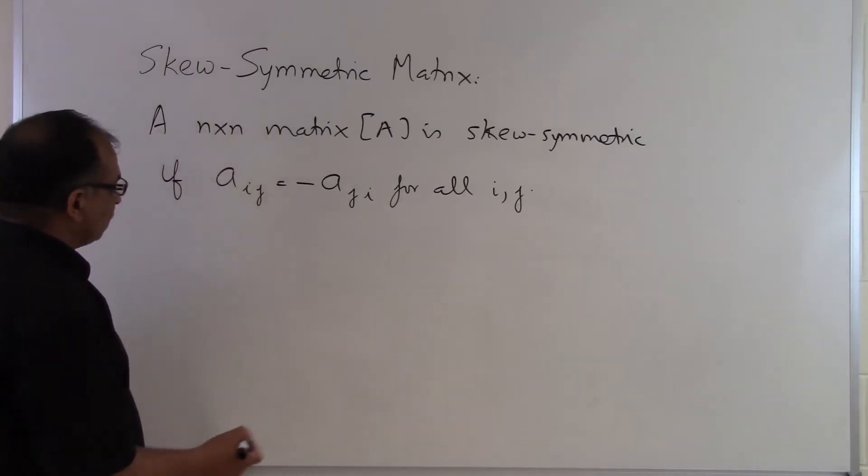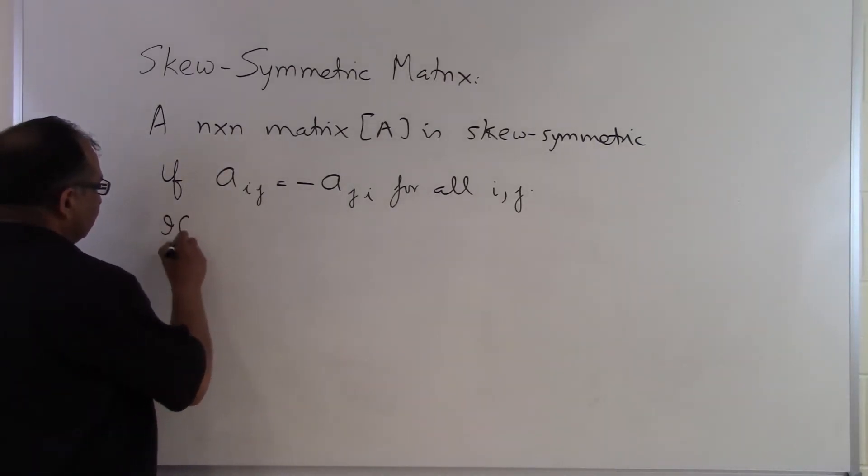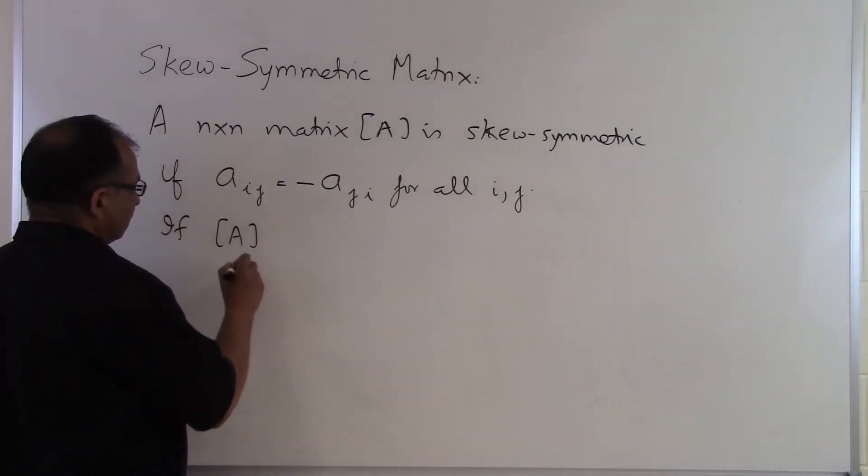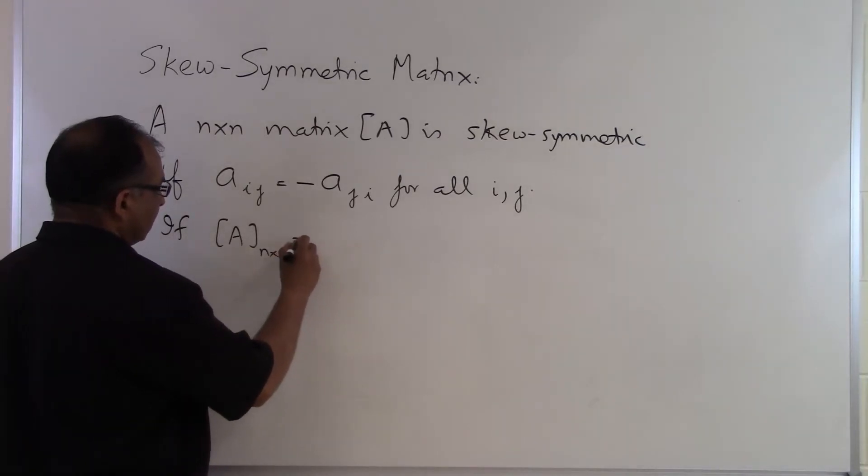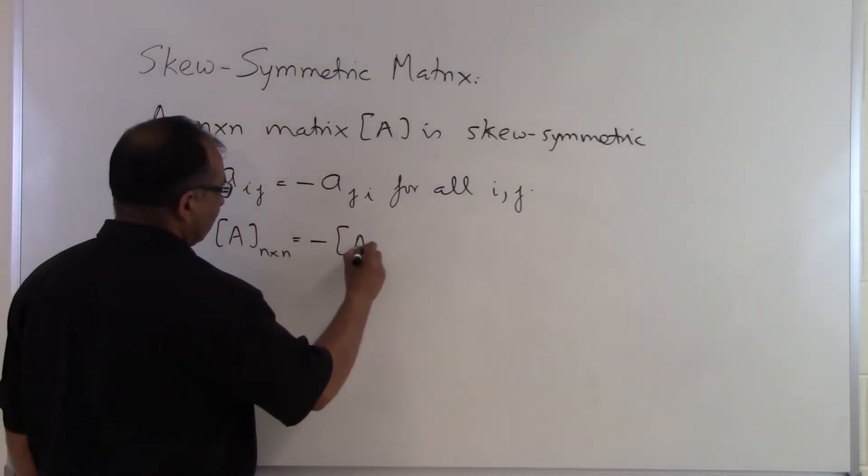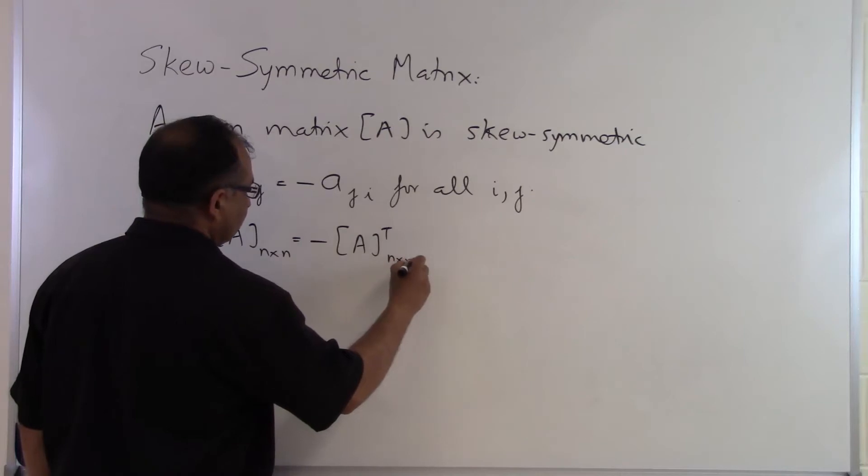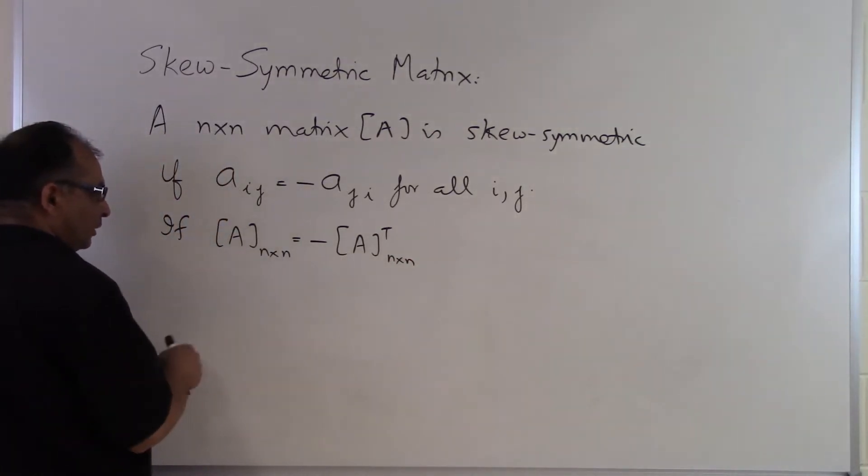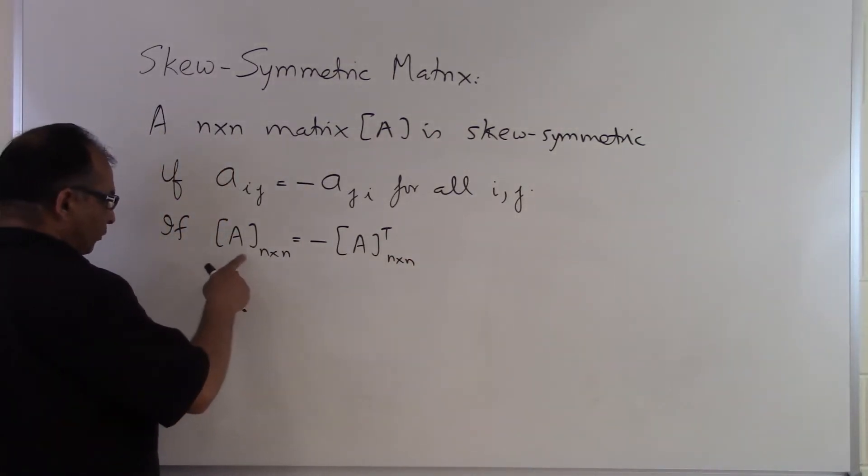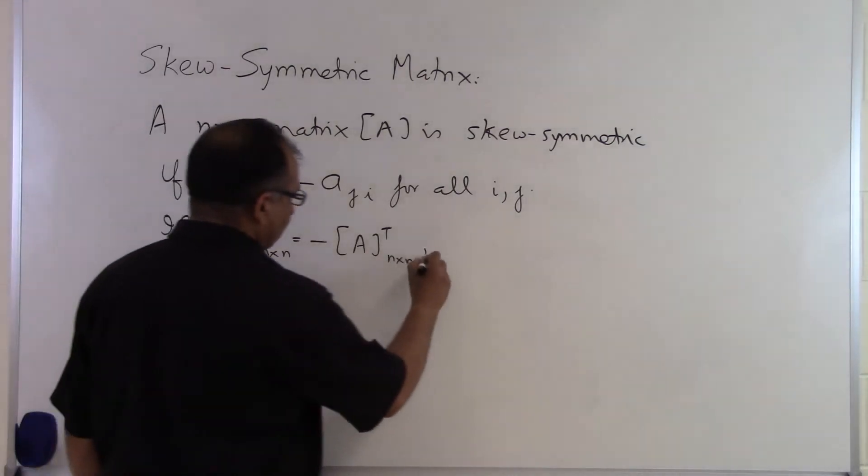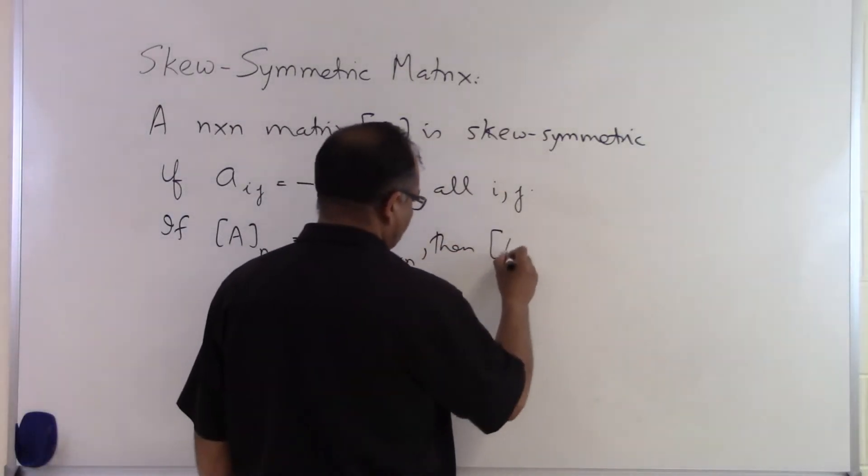So a skew symmetric. There is an alternate definition also. If A which is an n by n which is a square matrix is equal to minus of A transpose n by n matrix. So if the transpose of the matrix is negative of the original matrix then A is skew symmetric.